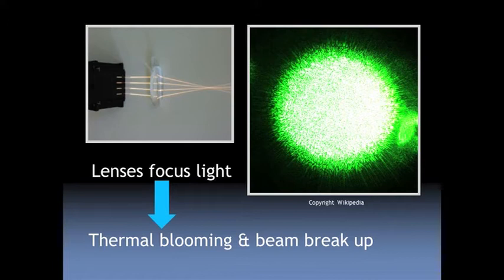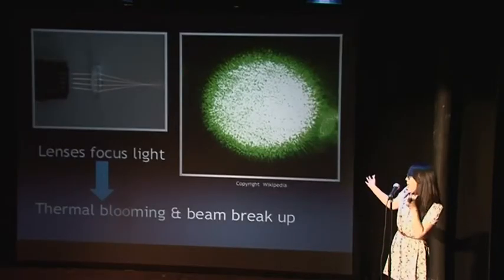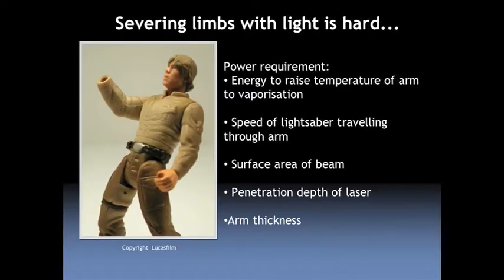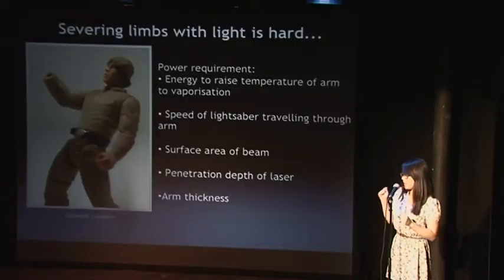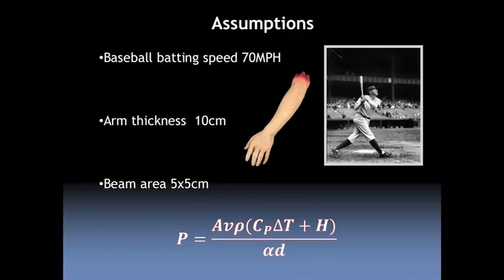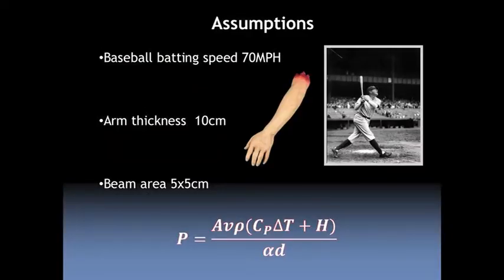Even if you think looks don't really matter and you just want a really powerful lightsaber, you're going to run into a second problem: how much power does it take to sever Luke's arm? You need to include things like the energy to raise the temperature of human flesh to vaporization, as well as the speed you'd like your lightsaber to go through the arm. Like a true scientist, I'll state my assumptions: a modest baseball batting speed of 70 miles per hour, a medium arm thickness, stick it into this equation — which I've only included for the really hardcore nerds out there — and you come up with 160 kilowatts.